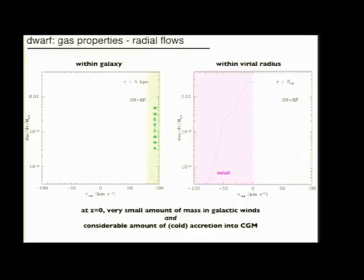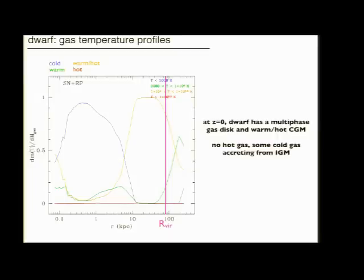Looking at the radial flows, we see that the distribution of velocities is very narrow, there's very little mass in outflows. Although there seems to be a small amount of mass accreting into the halo at about 50 kilometers per second, still at redshift zero in this dwarf galaxy, which is not quenched by radiation pressure.